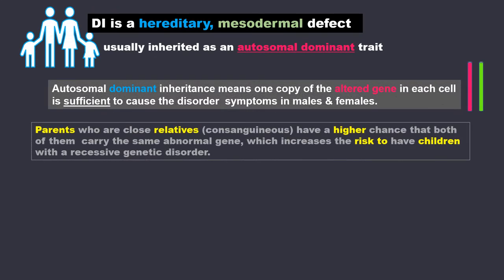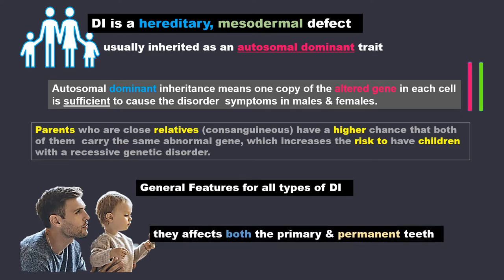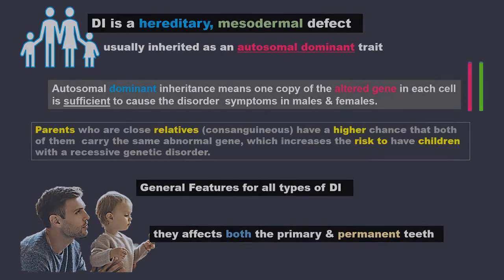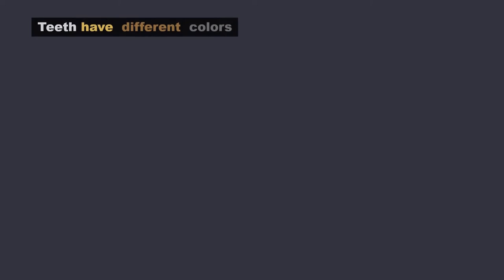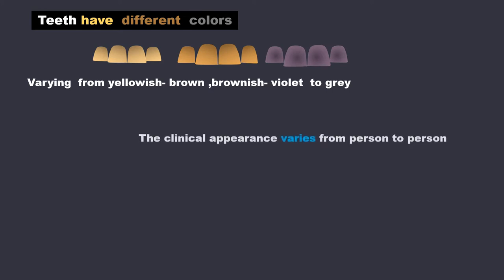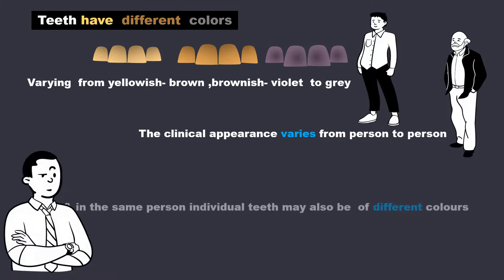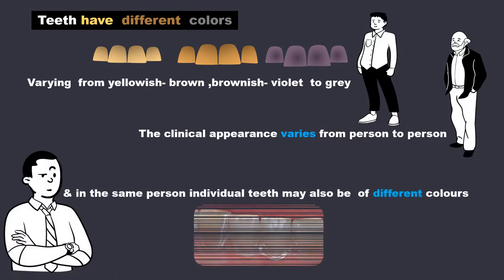General features for all types of DI are that they affect both the primary as well as the permanent teeth. Teeth have different colours, varying from yellowish-brown, brownish-violet to grey — some books call it blue-grey. The whole point is that we look out for different shades of discolouration. The clinical appearance in terms of colour varies from person to person, and in the same person, individual teeth may also be of different colours.